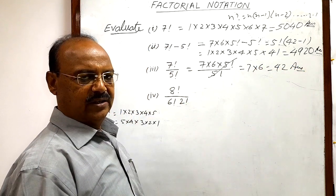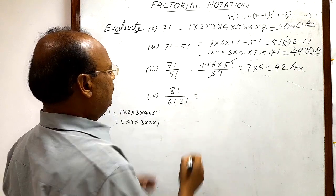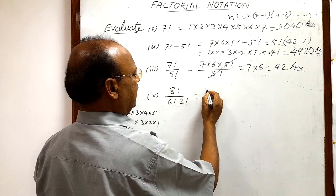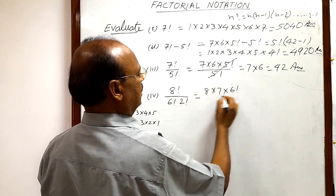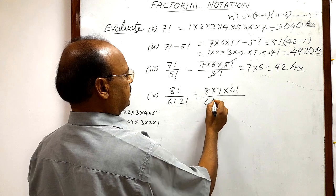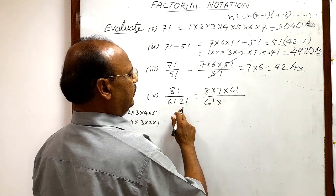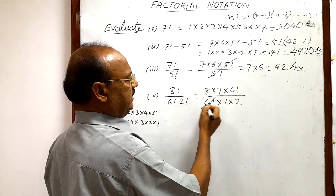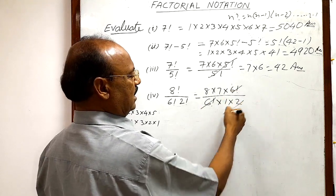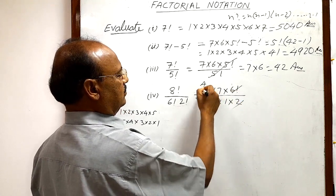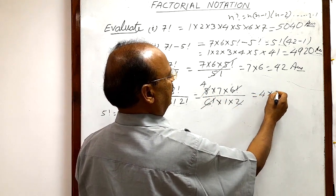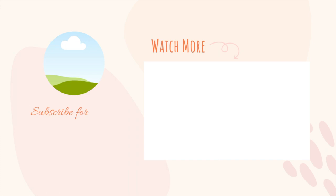Similarly, the fourth question: 8! divided by (6! × 2!). We write 8! as 8 × 7 × 6!, and the denominator is 6! × 2!, where 2! = 1 × 2 = 2. The 6! cancels out, and we can cancel 2 with 8 to get 4. So the answer is 4 × 7 = 28.